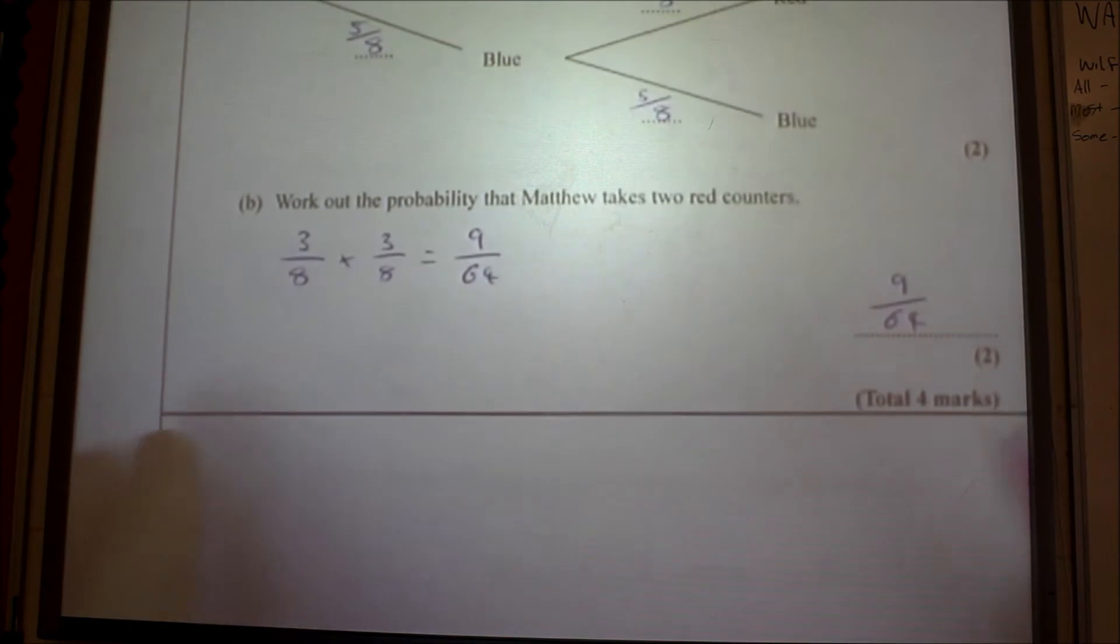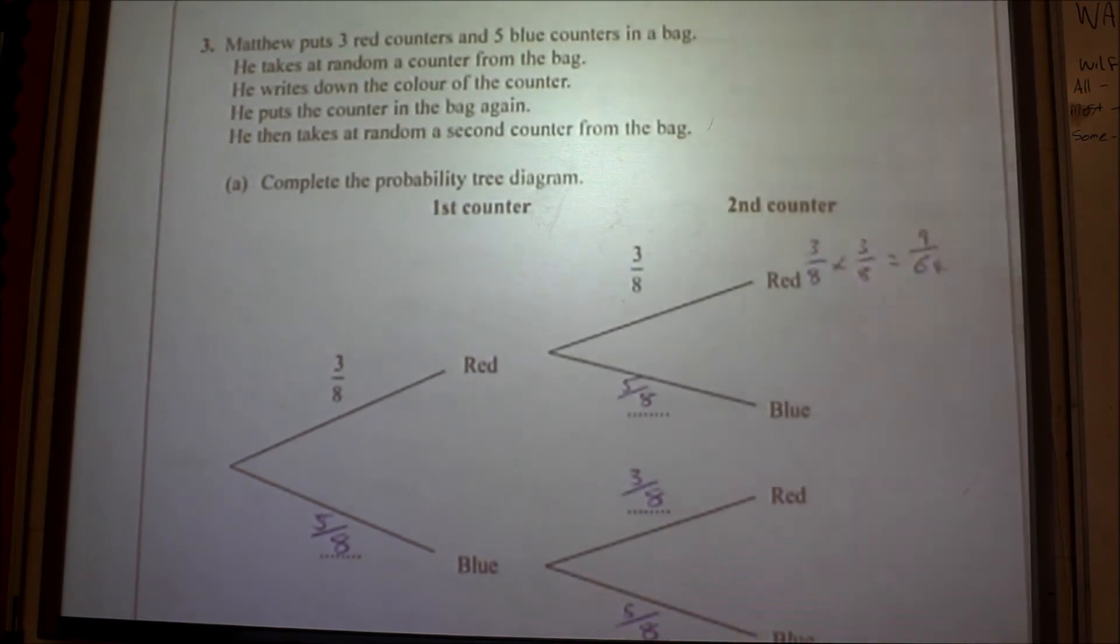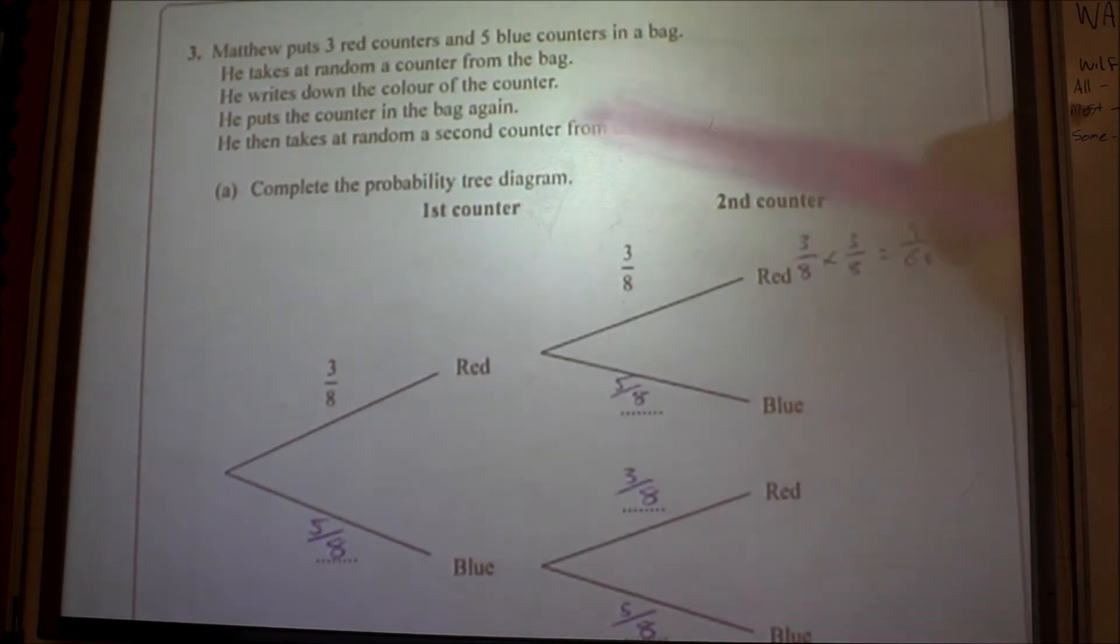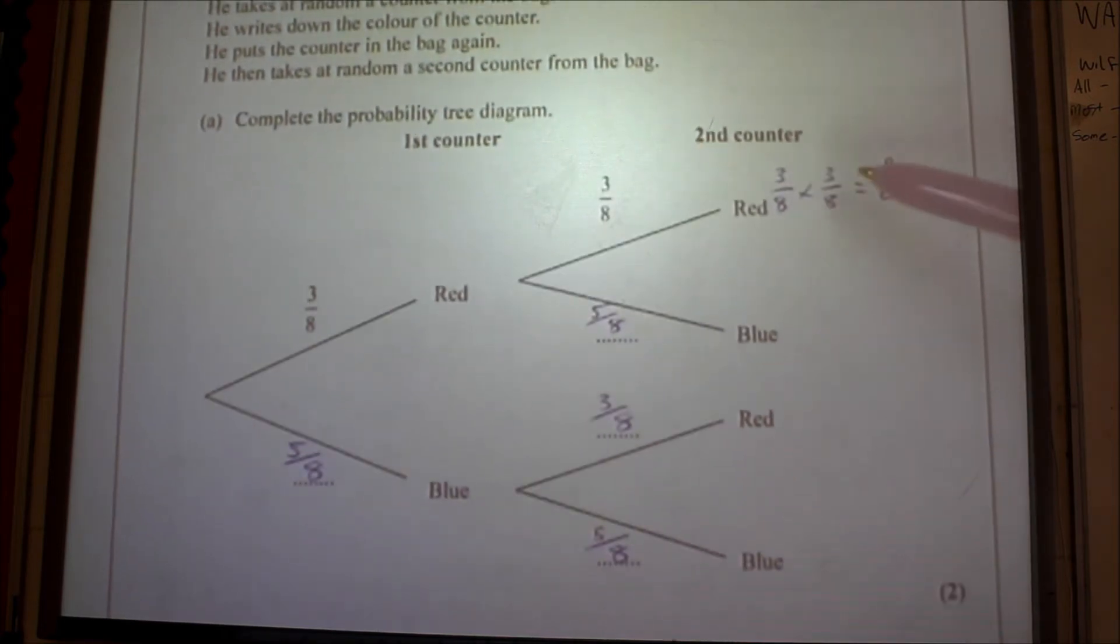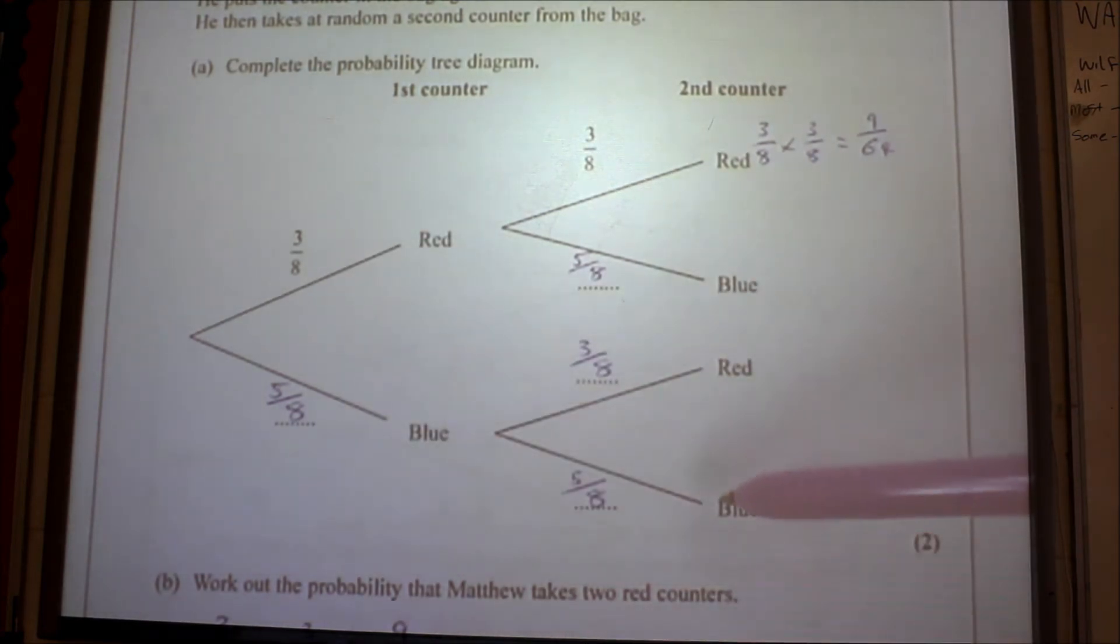Question number three. Matthew puts three red counters and five blue counters in a bag. He takes a random counter from the bag. He writes down the color of the counter. He puts the counter in the bag again, so if he puts the counter back in, that's quite handy for us. Fill out the rest of the table. Well, if it's three eighths for a red one, it's got to be five eighths for a blue one, because there's three red and five blue ones in there.